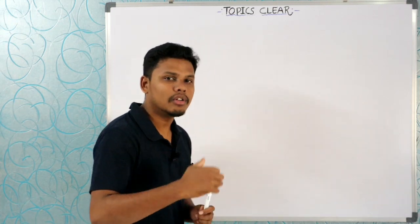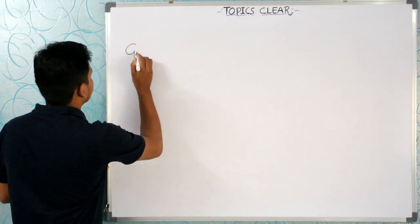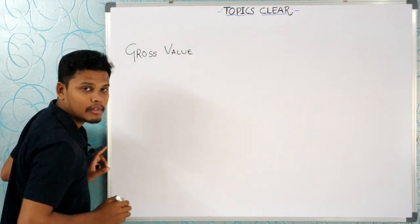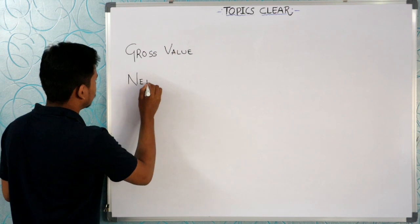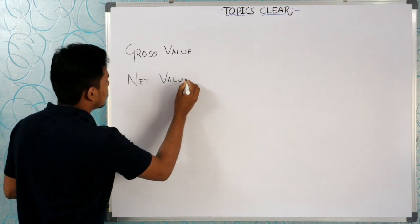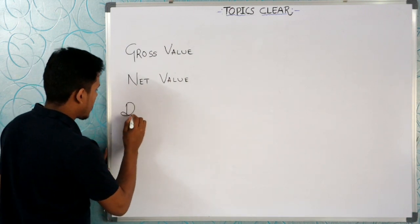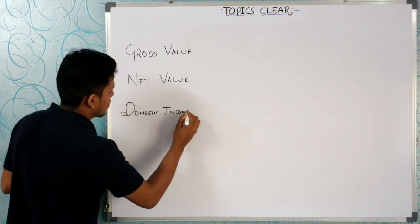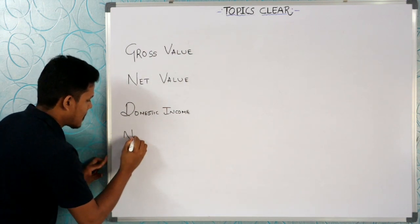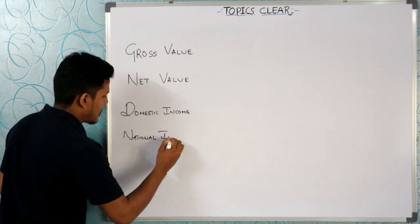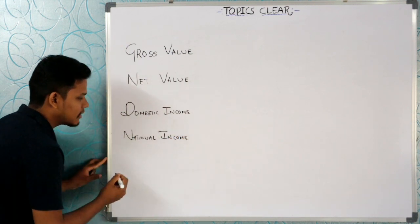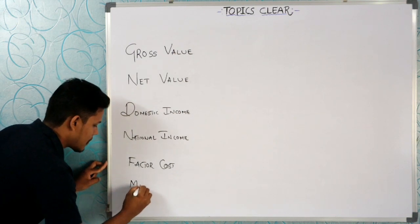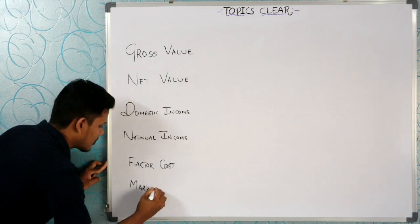To start the course, we have to learn the basic terms: gross value, net value, domestic income, national income, factor cost, and market price.